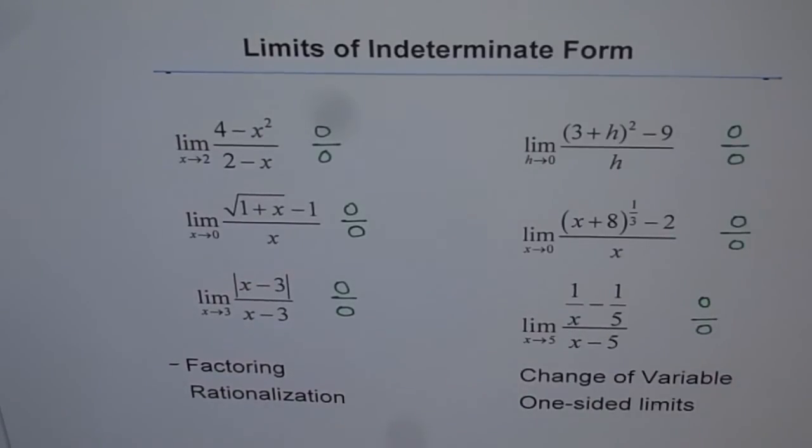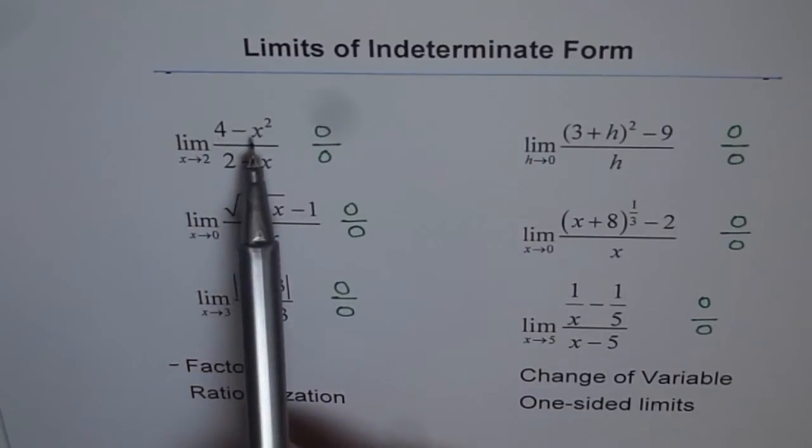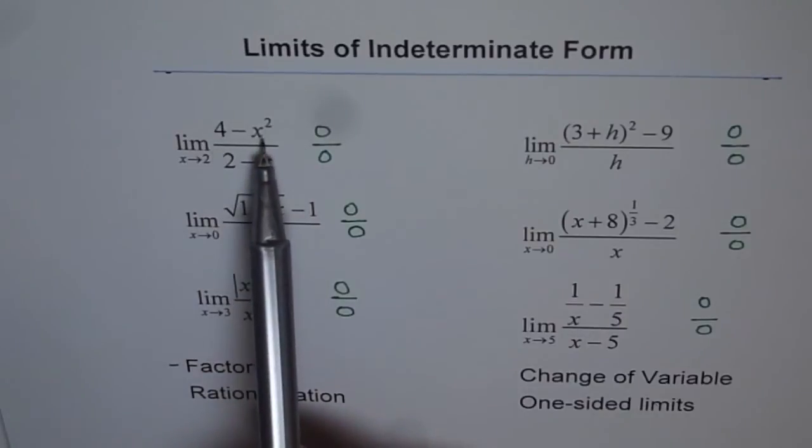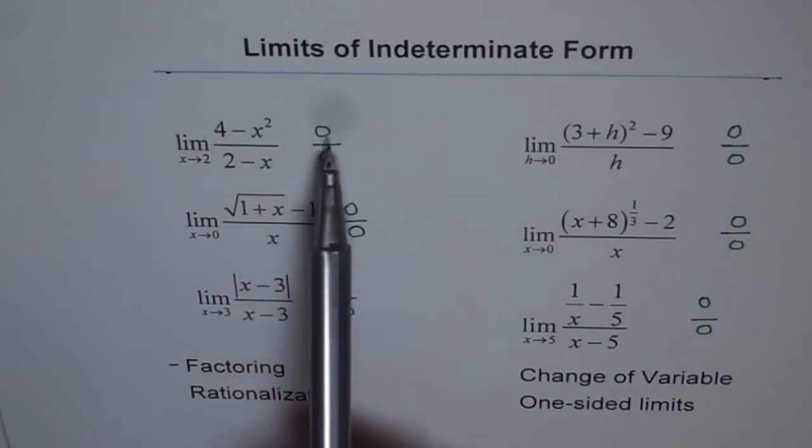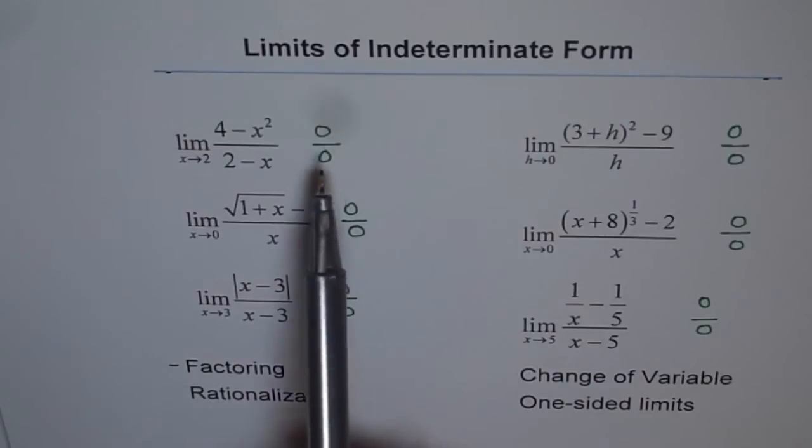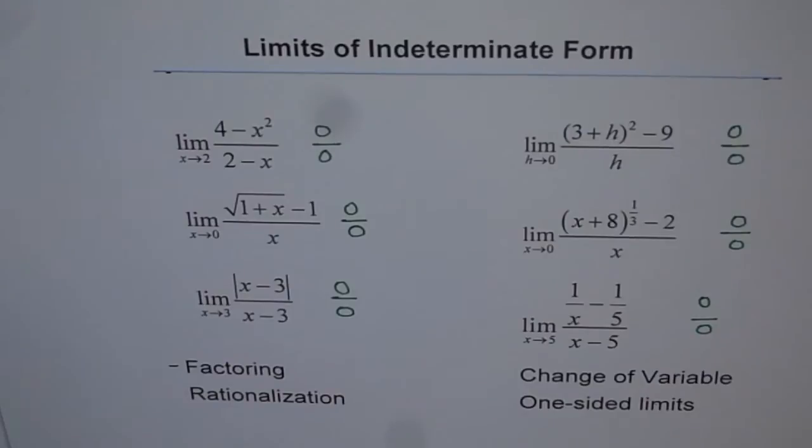So one technique is factoring. For example, if I factor this, I get 2 minus x times 2 plus x. This is difference of squares. Then 2 minus x will cancel out. I will be left with 2 plus x. I can substitute 2, so I get 2 plus 2 as 4, which is my limit for this function as x approaches 2. So that is a good technique to use. We will have a few examples where we will explore how and when to use factoring.